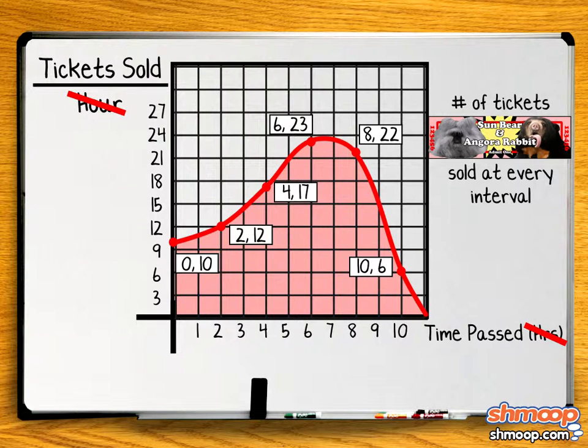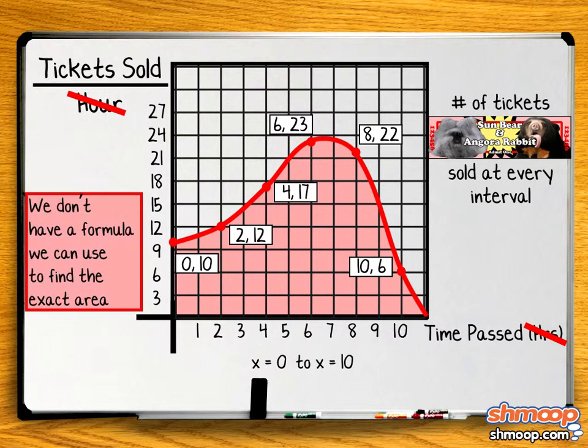So to figure out how many tickets were sold in total, we just need to find the area under the curve from x equals zero to x equals ten. That's one integral. Unfortunately, the curve is in irregular shape, which means we don't have a formula we can use to find the exact area.